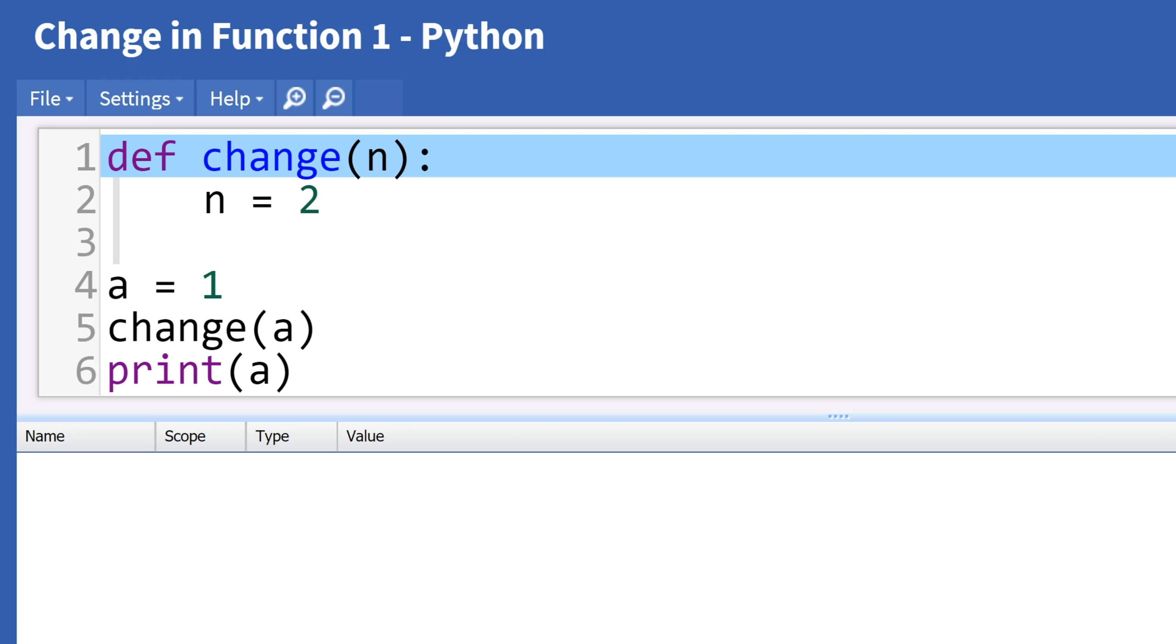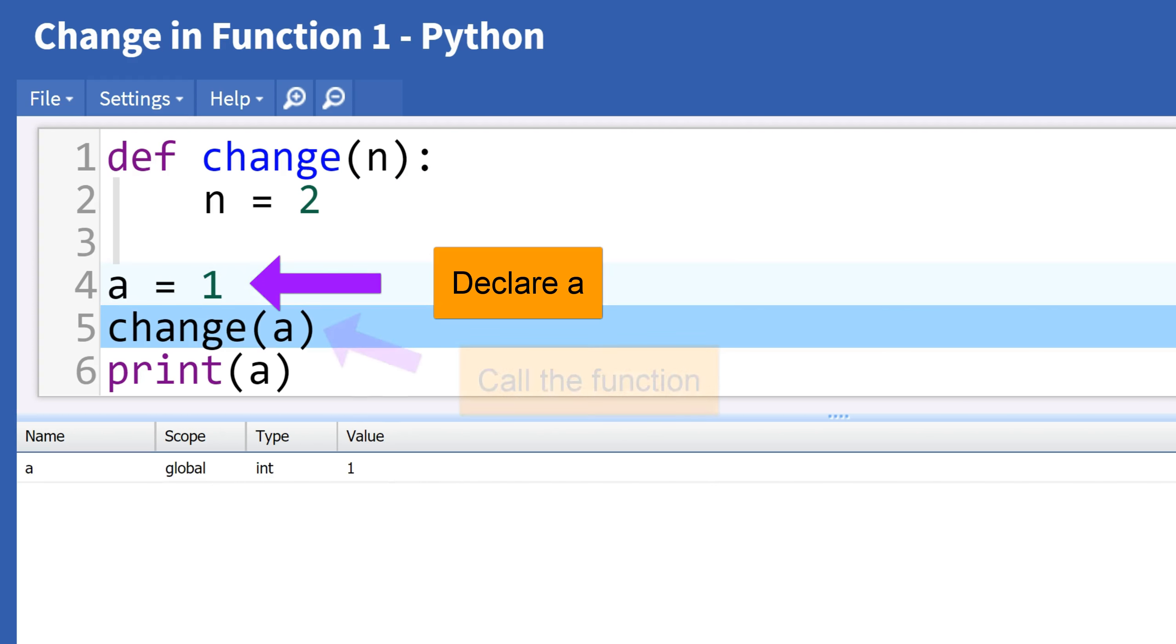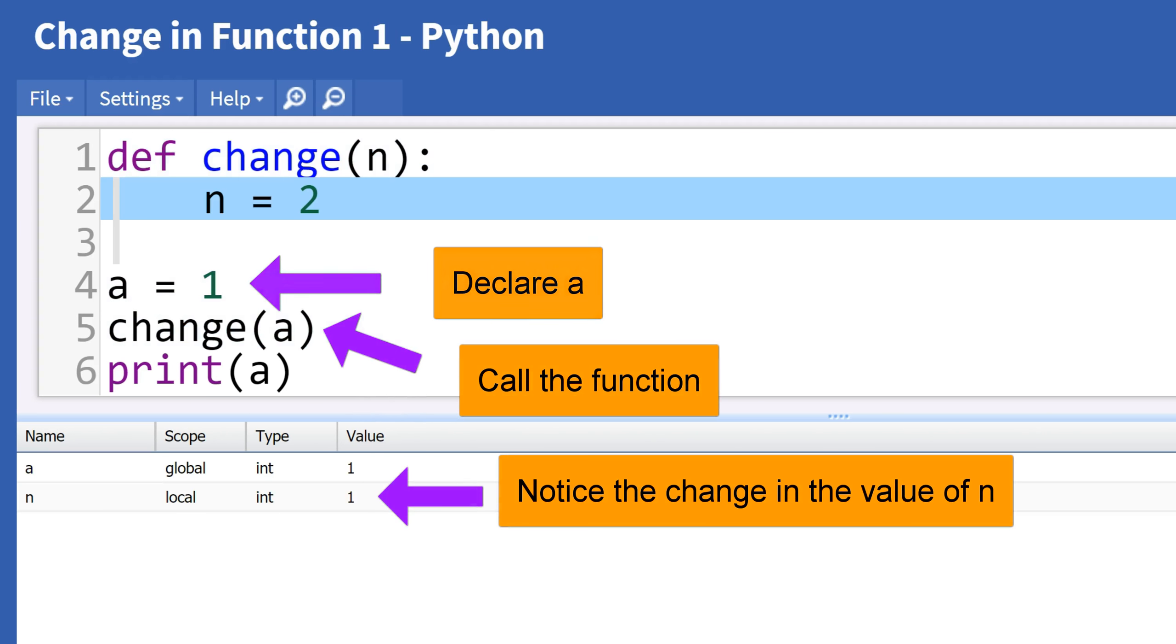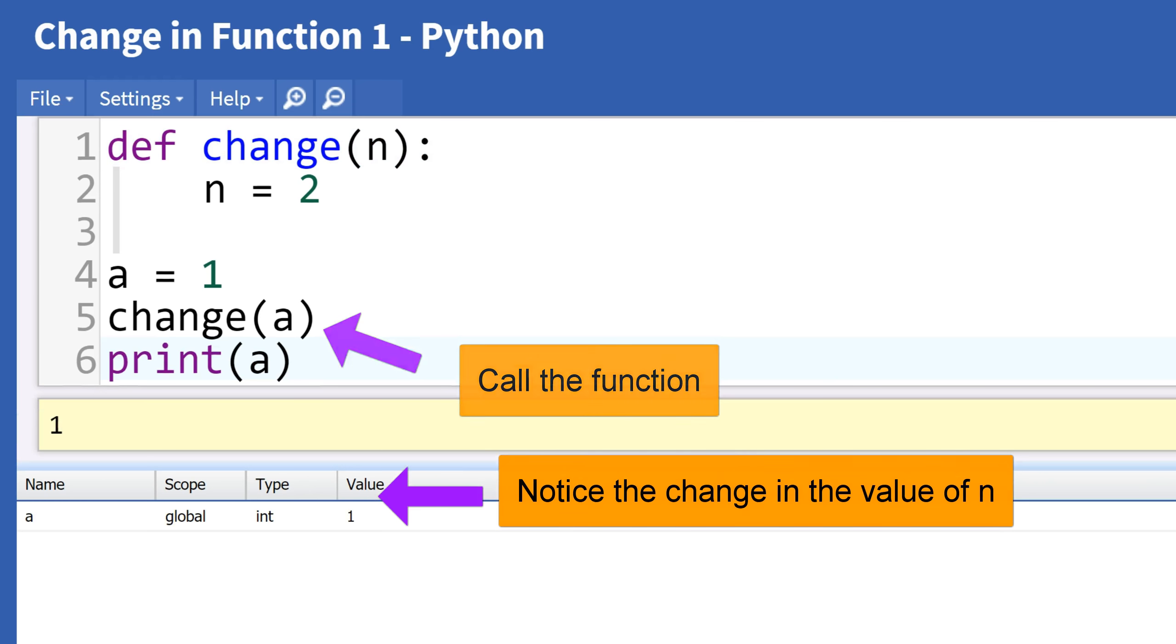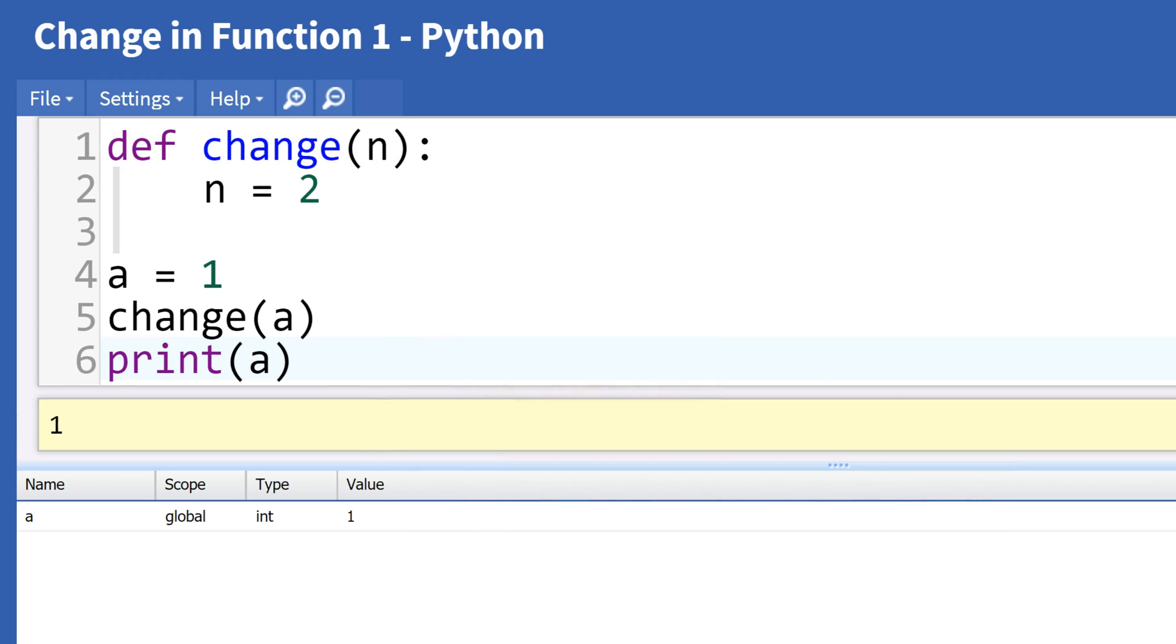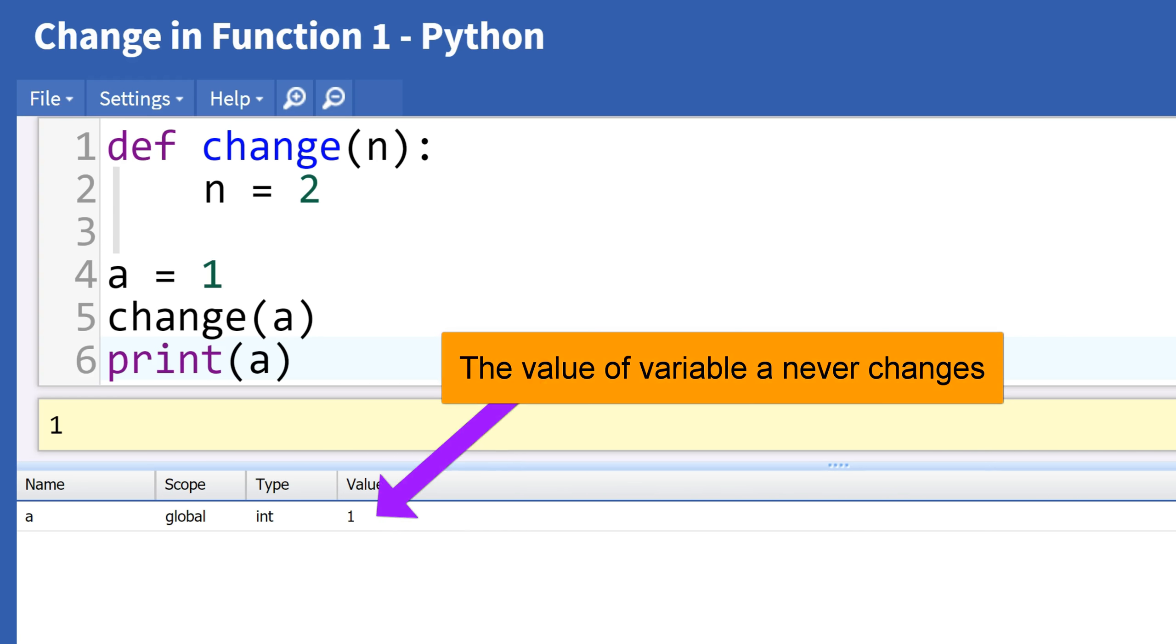However, we cannot change it with a function. When we print a, it still prints as one. The value two never replaces one.